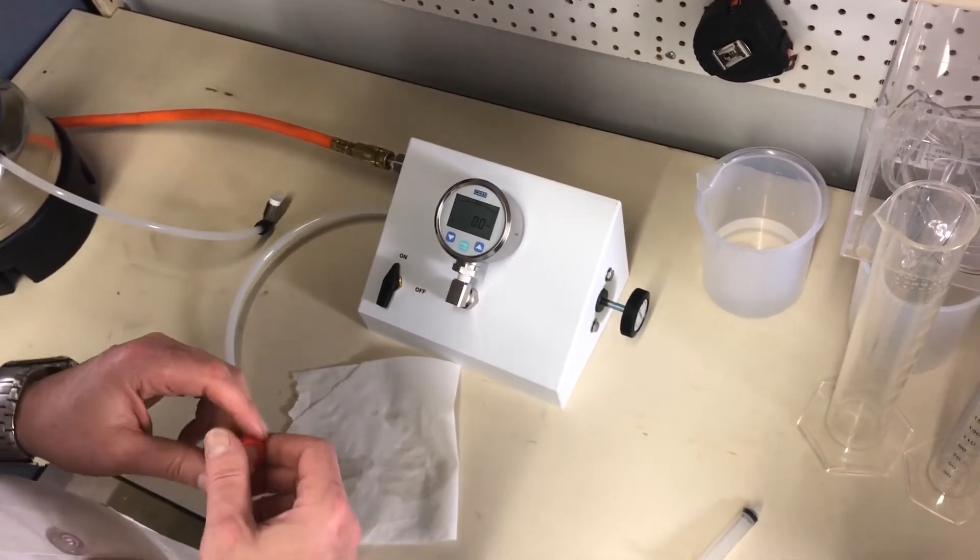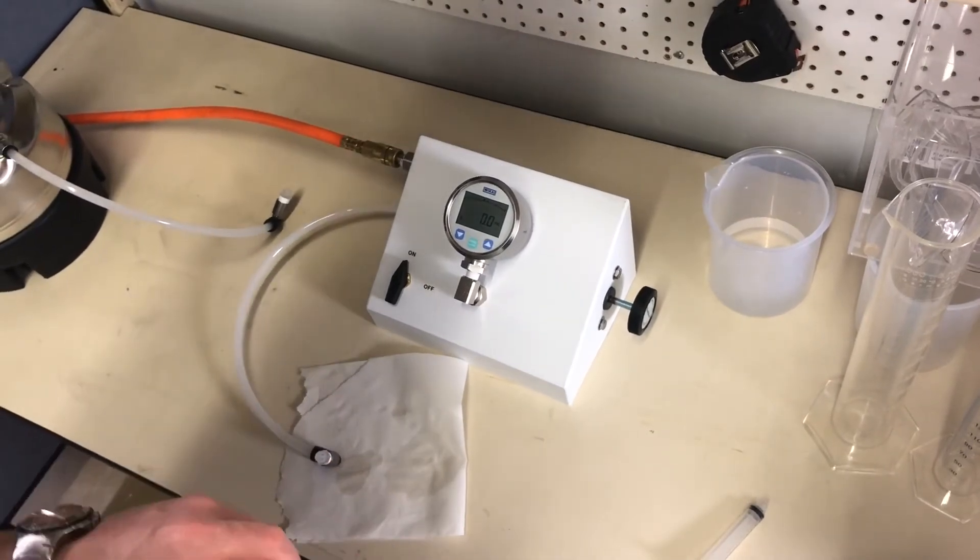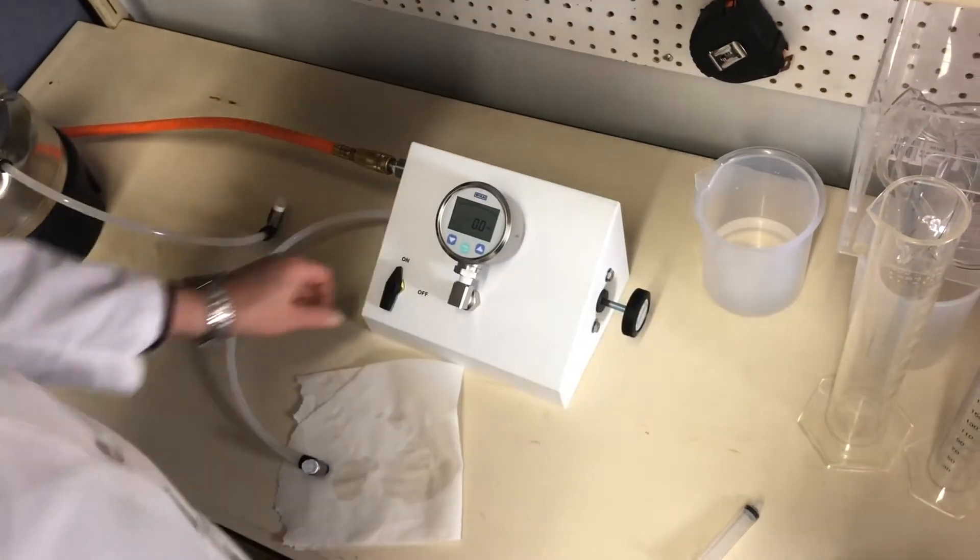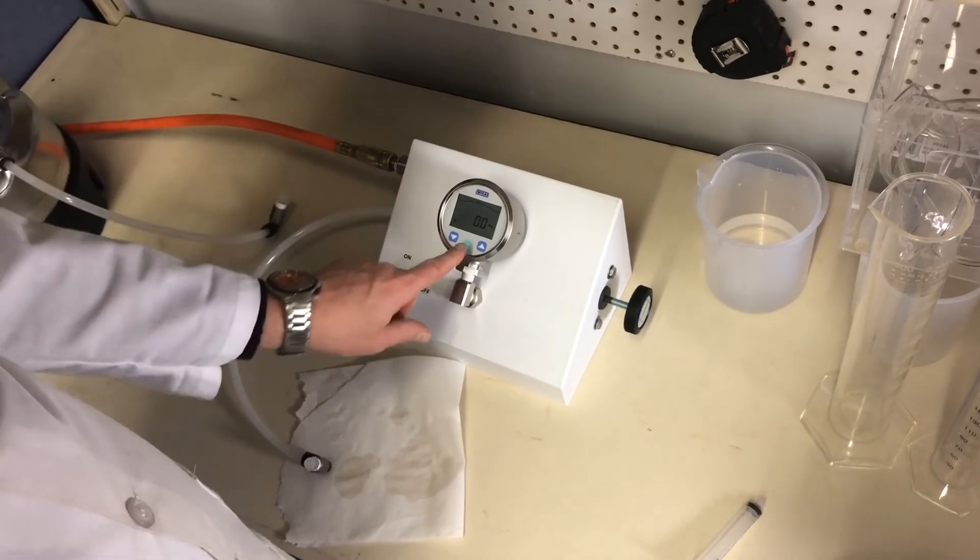And if you want to try another one, you can certainly do that. If you're finished, make sure the pressure is still reading zero. And then you just simply turn the air off and then turn the gauge off.